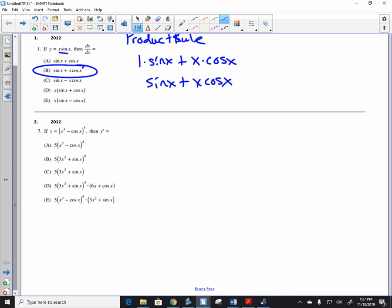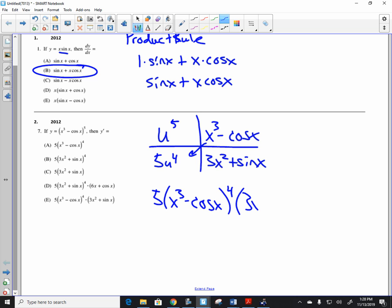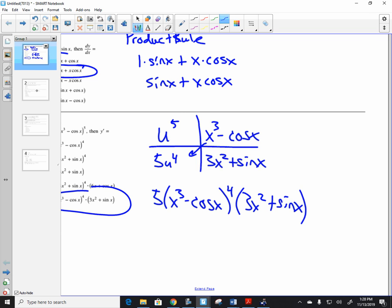Now we need to take y prime. You should see the chain rule in this situation. So we have u to the fifth, and we have x cubed minus cosine of x. The derivative of x cubed minus cosine of x is 3x squared plus the sine of x. And the derivative of u to the fifth is 5u to the fourth. So we get 5 times x cubed minus cosine of x raised to the fourth power times 3x squared plus sine of x. So right now you're feeling pretty good about yourself because some of you guys are two for two.